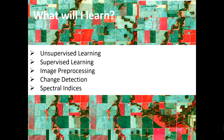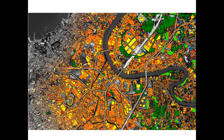The topics covered in this course include unsupervised learning, supervised learning, image preprocessing, change detection, and spectral indices calculation — all of which I'm going to show you how to do in Google Earth Engine. We will implement machine learning algorithms such as k-means clustering, classification and regression trees, and random forest, based on Landsat and Sentinel image data using the JavaScript-based Google Earth Engine API.